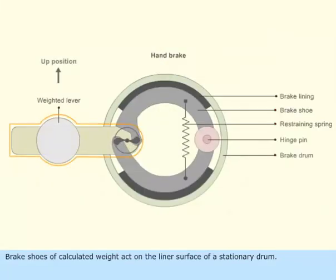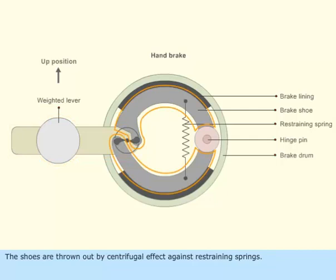Brake shoes of calculated weight act on the liner surface of a stationary drum. The shoes are thrown out by centrifugal effect against restraining springs.